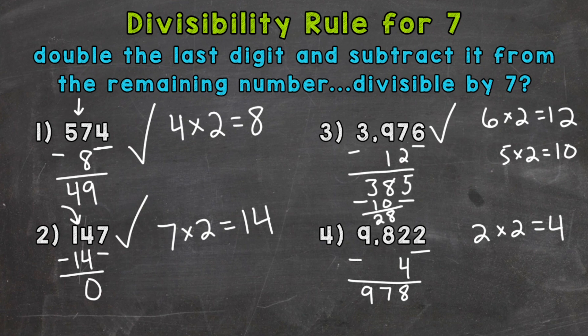Still a three-digit number and fairly large in value to work with here, so we are going to repeat our steps. Let's take a look at the last digit, which is 8, and double it. So 8 times 2 gives us 16.